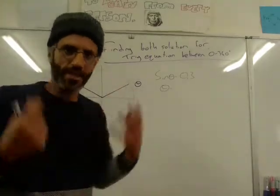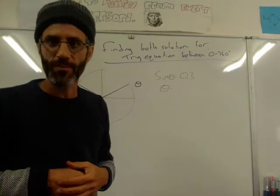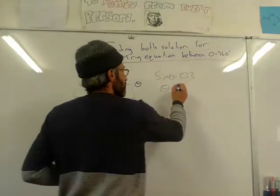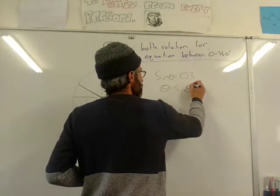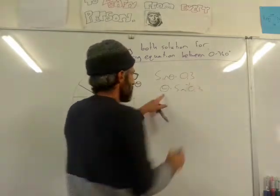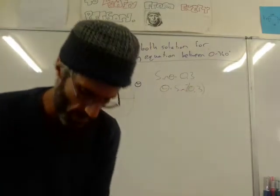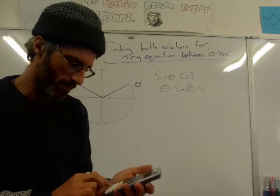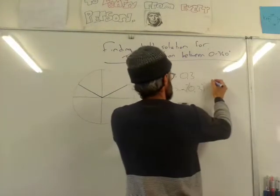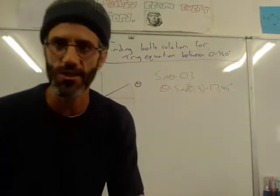Let's move on to another example. Let's have another equation: sine theta equals 0.3, and I want to find what theta is. The first thing you need to do — this is not a special angle — you just need to punch it into your calculator. Sine-minus-one of 0.3, or theta equals sine-minus-one of 0.3. You put that in your calculator. Shift sine, 0.3, close brackets — it's 17.46. It carries on, but I'll round to two decimal places.